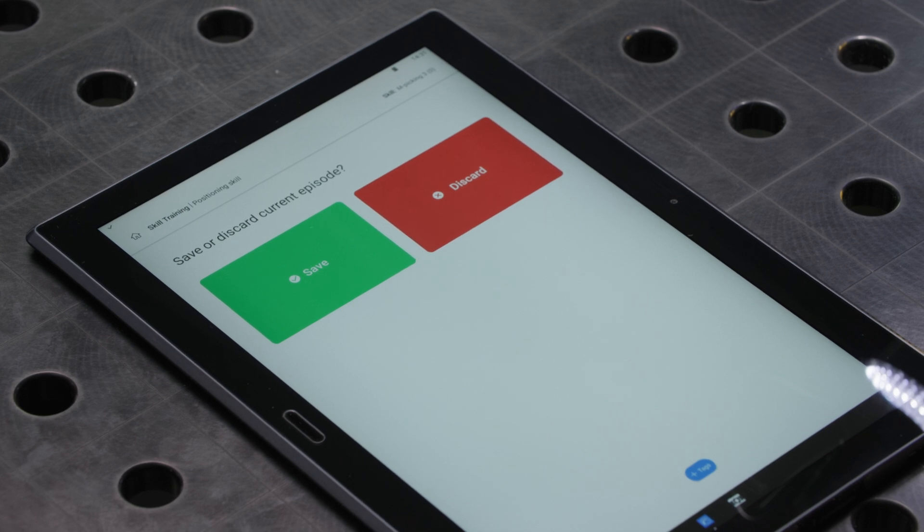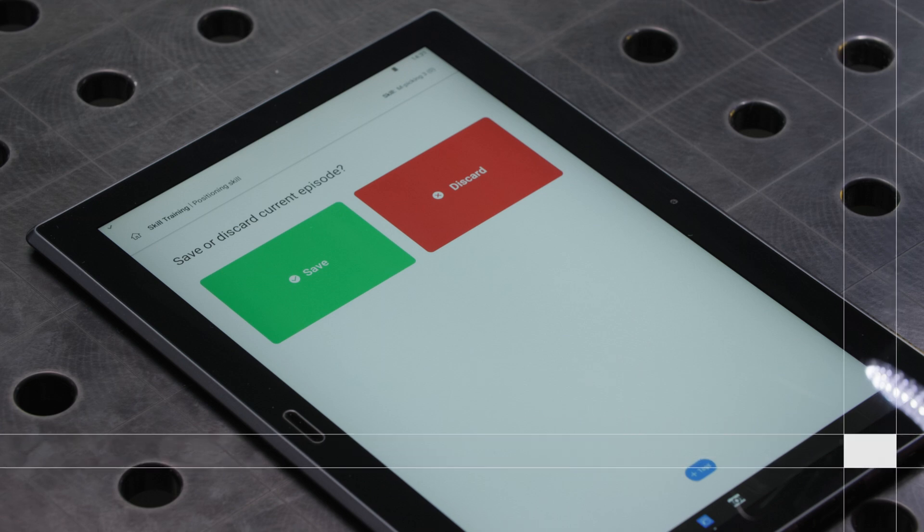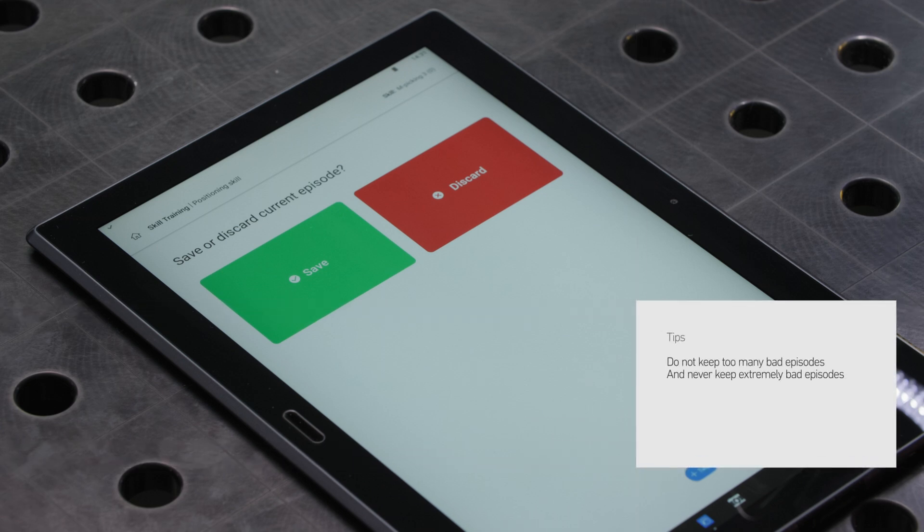As to whether to save or discard an episode, there isn't a list of rules that determine whether an episode is high or low quality. Above all, don't keep too many bad episodes and never keep extremely bad episodes. Two tips: Try to keep your target in the camera image and to keep your hands out of the image.